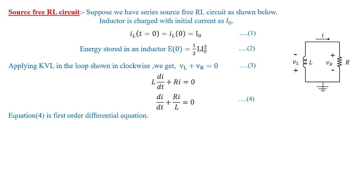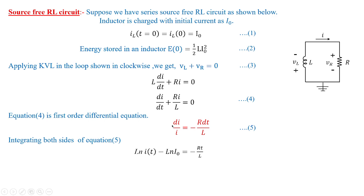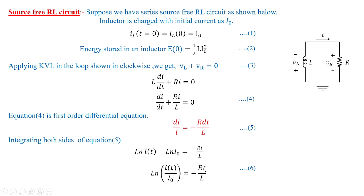Equation 4 is a first-order differential equation. Its solution is obtained by separating variables: di/i = −(R/L)·dt, then integrating both sides with lower limit 0 and upper limit I(t). This gives ln·I(t) − ln·I0 = −RT/L, which simplifies using the log rule ln(A) − ln(B) = ln(A/B) to ln[I(t)/I0] = −RT/L.